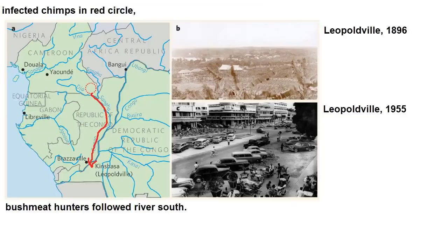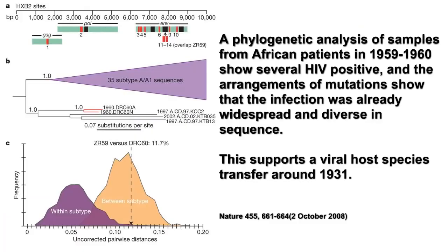Based on mutation and divergence rates, we can place at least one transfer of virus from chimp to human at or around 1931 in the country now known as the Democratic Republic of Congo. There is some evidence to suggest that previous transfers of chimp to human may have occurred as far back as the 1880s, but it's not yet clear if these prior transfers had any ancestry to the current strains.